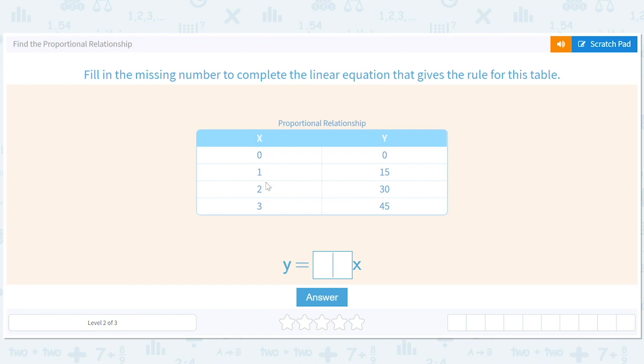So as x gets bigger, y gets bigger. But how much bigger? Okay, so when x goes up by 1, y goes up by 15. When x goes up by another 1, y goes up by another 15. So every time x goes up 1, y goes up 15.